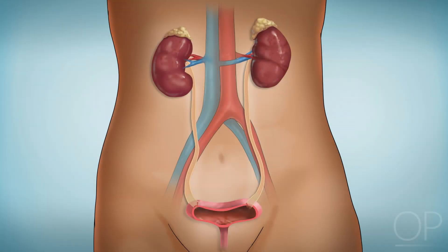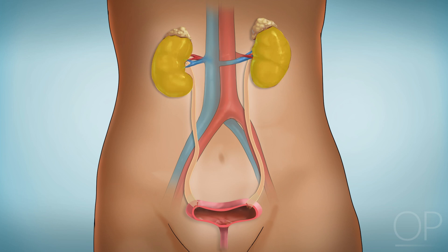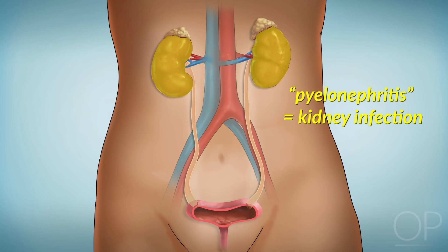Urinary tract infections are typically ascending infections, meaning that bacteria colonizing the urogenital skin enter through the urethra and travel to the bladder where they cause infection. If the infection ascends to the kidney, it is called pyelonephritis.